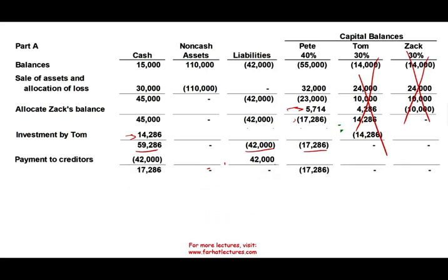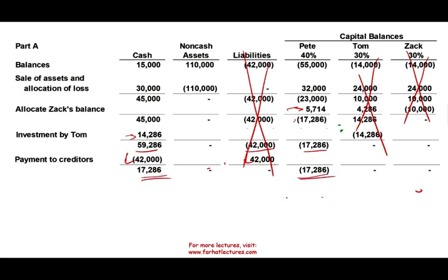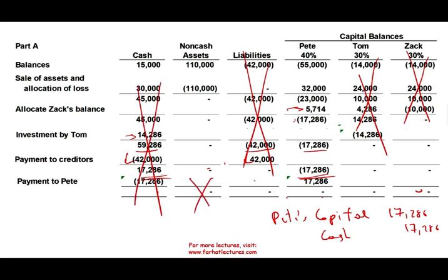The next thing we're going to do is pay off the liability. We're going to pay off the liability for $42,000. The entry is: debit liabilities $42,000, credit cash $42,000. Cash goes down, liability goes down — the liability is out too. What we're left with is Pete, who still has $17,286 of capital. We're going to distribute the remaining cash to him: debit Pete's capital $17,286, credit cash $17,286. Cash is out, non-cash assets are gone, liabilities are gone, Pete's capital is gone — we liquidated the partnership.